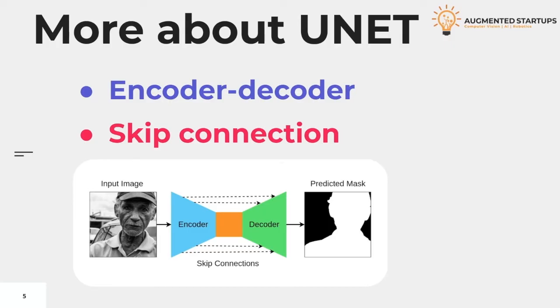Another important feature of the UNET is the use of skip connection. Skip connection, as the name suggests, skips some of the layers in the neural network and feeds the output of one layer as the input to the next layers.